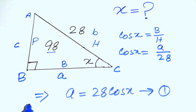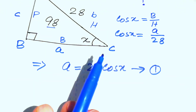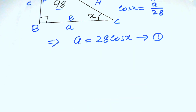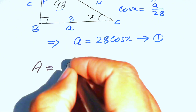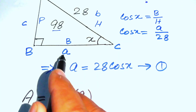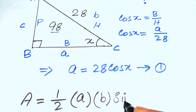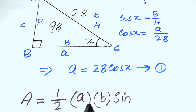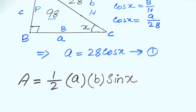Next, we use the area formula for a triangle when two sides and their included angle are known. The formula is: Area = ½ · a · b · sin(angle between a and b). In our triangle, the two sides are a and b, and the angle between them is x, so we use sin(x) in the formula.